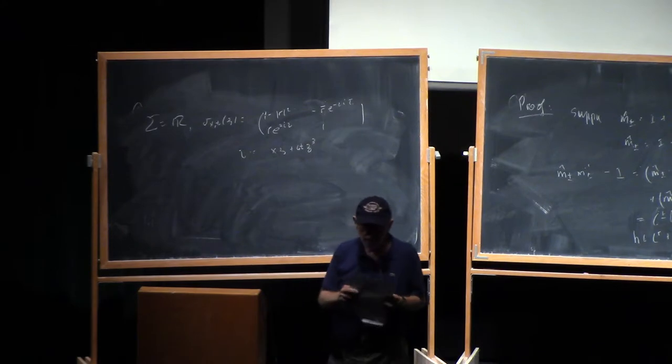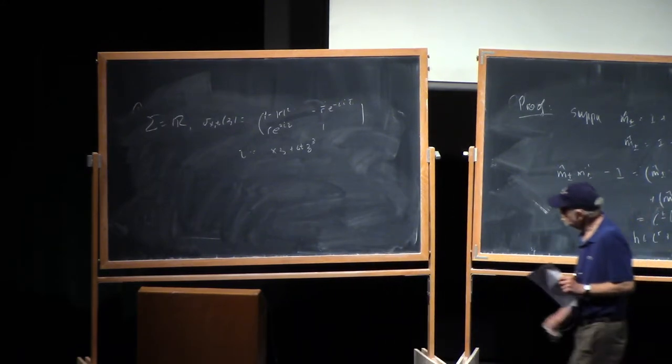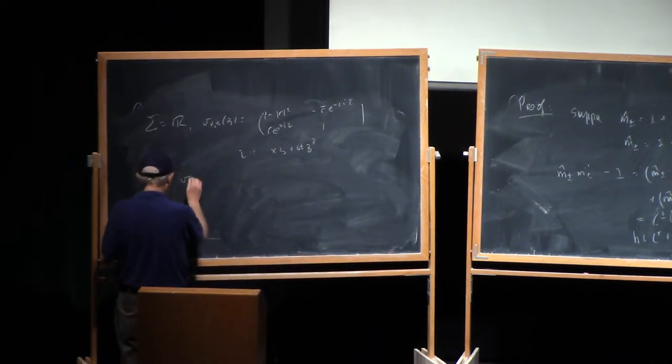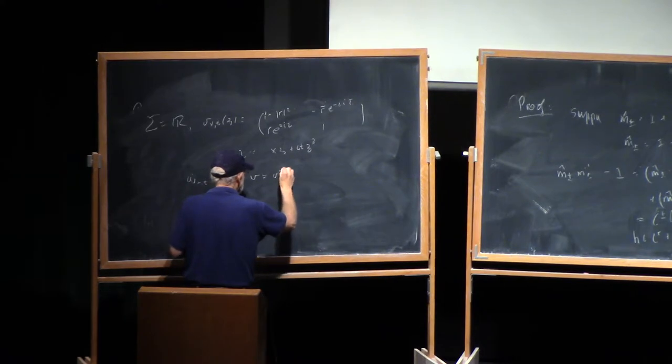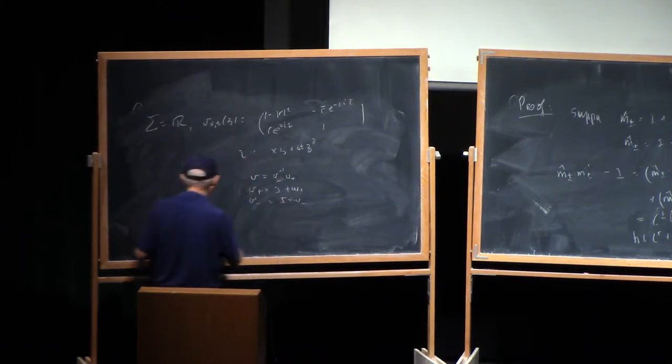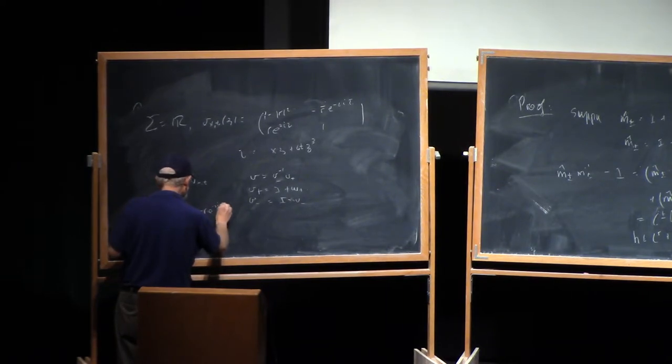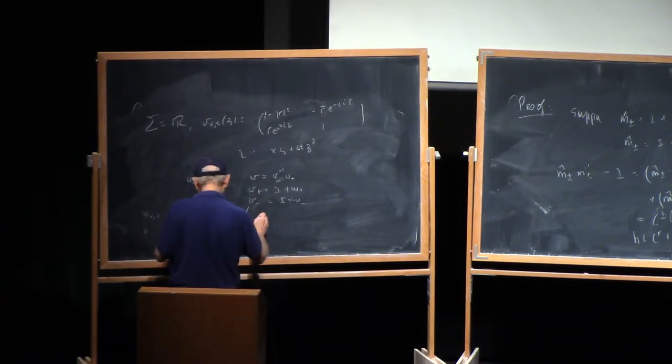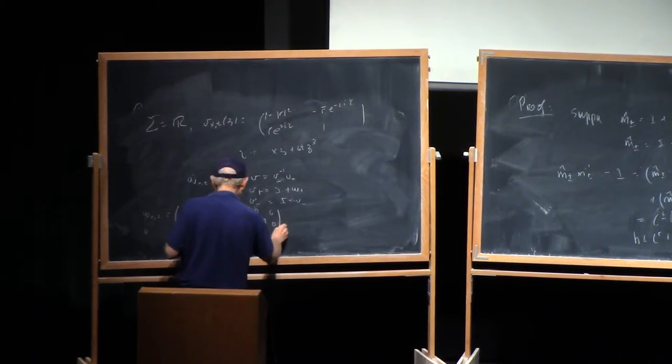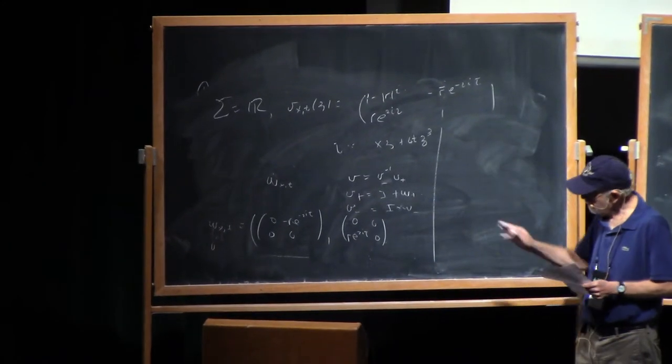Now, this Riemann-Hilbert problem here arose, you will remember in the very first lecture, in the modified KdV, in analyzing the modified KdV equation. How do we know that the normalized Riemann-Hilbert problem here exists? Now, there are different ways of doing this. But one way is to use a factorization where Vxt, remember, V is V minus inverse times V plus and V plus is 1 plus W plus and V minus is 1 minus W minus, 1 minus that. So we define Wxt to be 0, 0, 0 minus r bar e to the minus 2i tau.